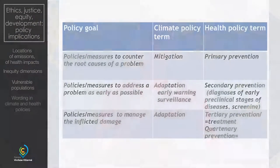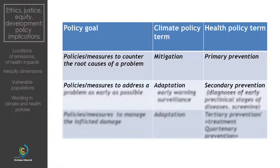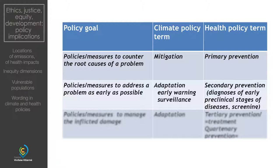This graph shows the wording of different approaches in health and climate policy. On the left you see what the policy wants to achieve. A policy that counters the root cause of a problem is called primary prevention in health, and mitigation in climate policy. The next level — measures to address a problem as early as possible — is called adaptation, early warning, and surveillance in climate policy, and secondary prevention in health terms.